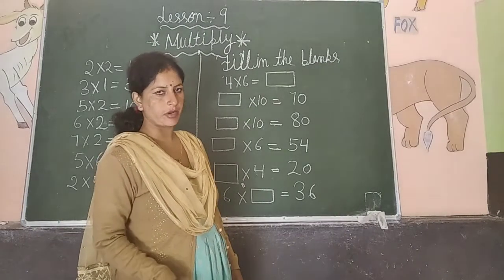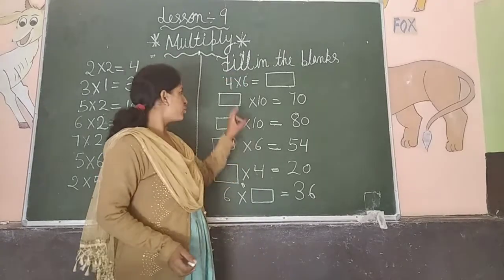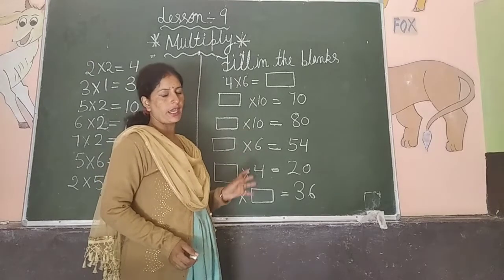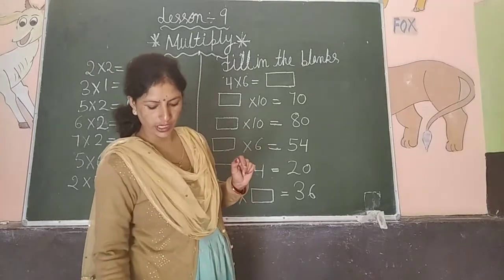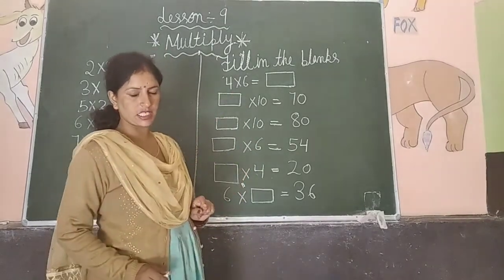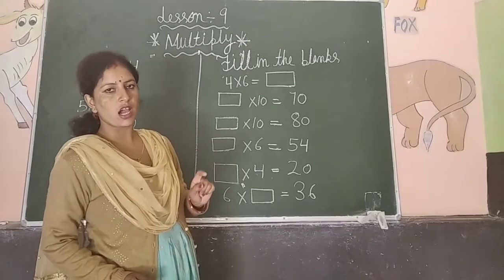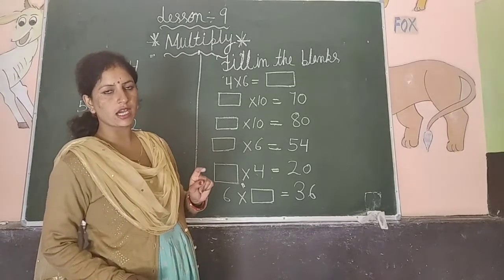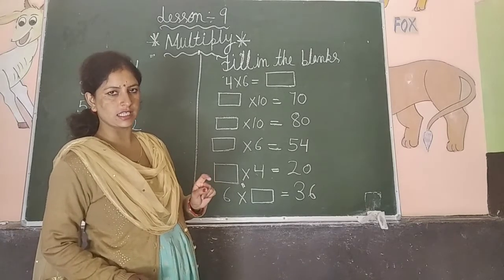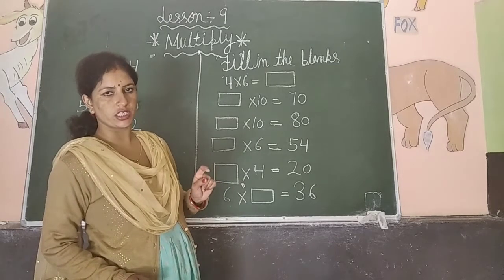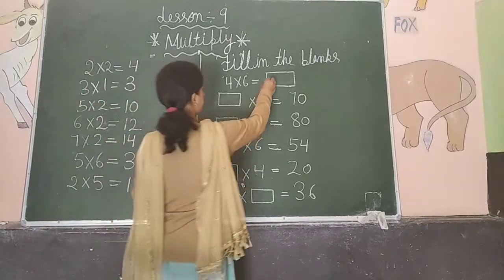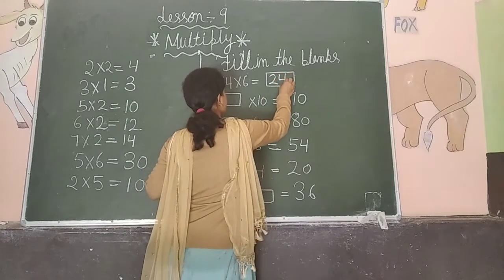Similarly, there is a second part — Fill in the Blanks. Blanks are given and you have to think and fill in the correct number. So the first one is 4 × 6. You need to know the table of 4: 4 ones are 4, 4 twos are 8, 4 threes are 12, 4 fours are 16, 4 fives are 20, 4 sixes are 24. So in this blank, 24 will come.